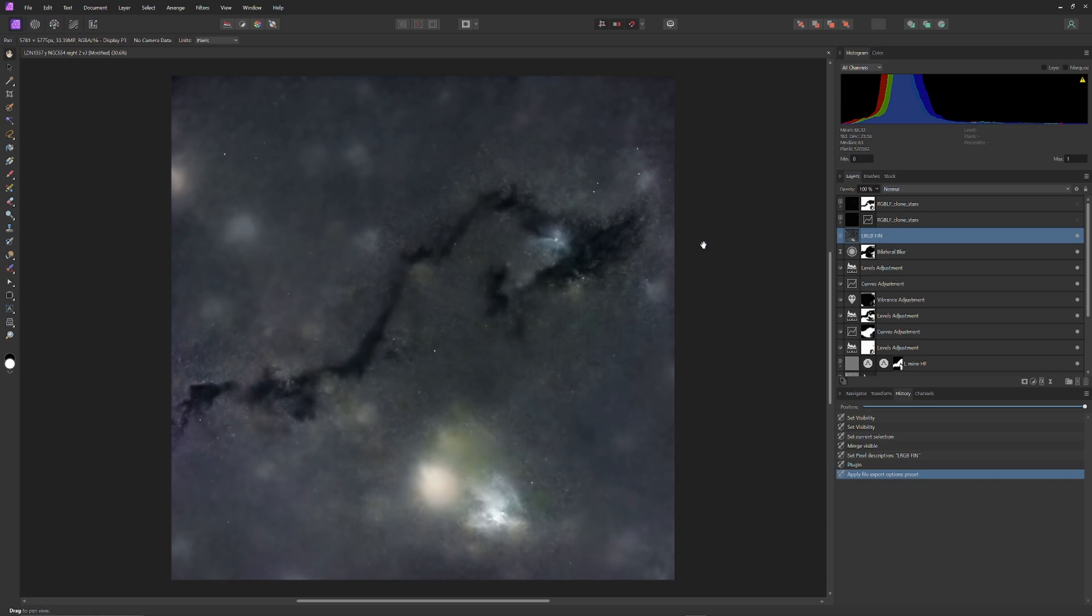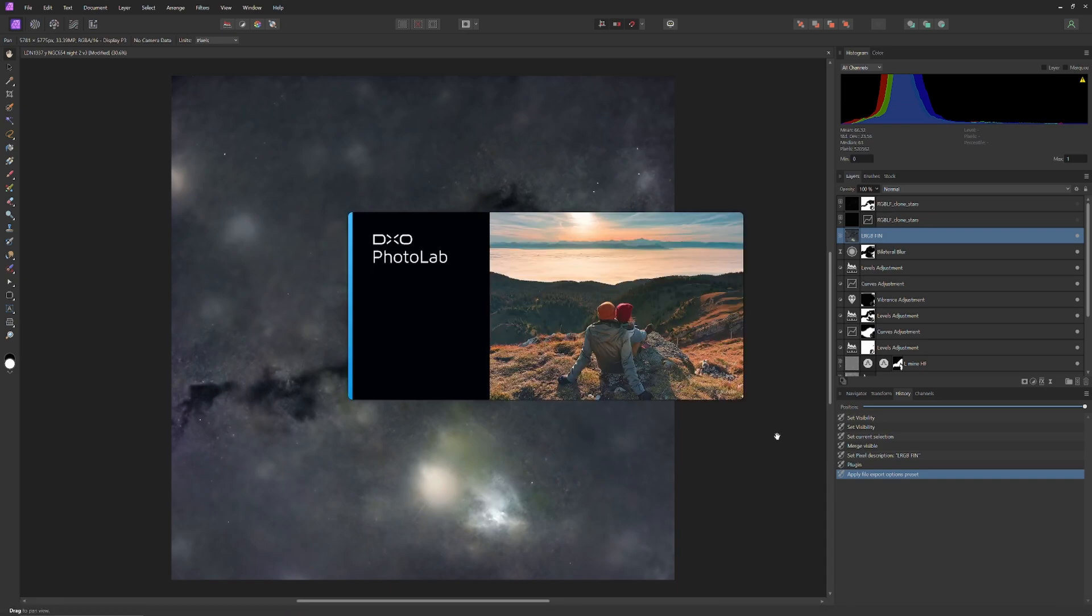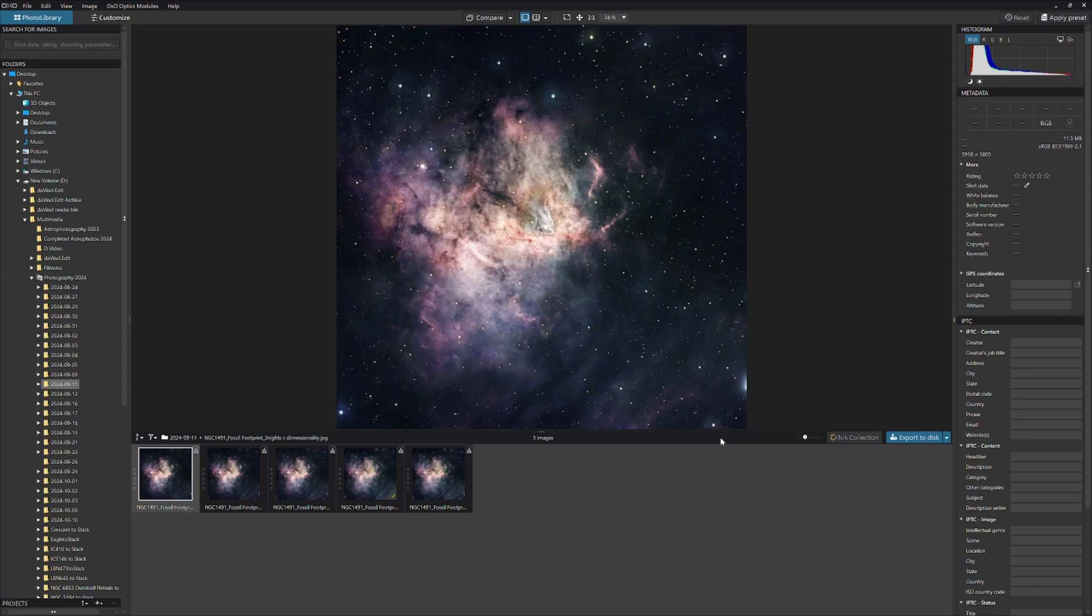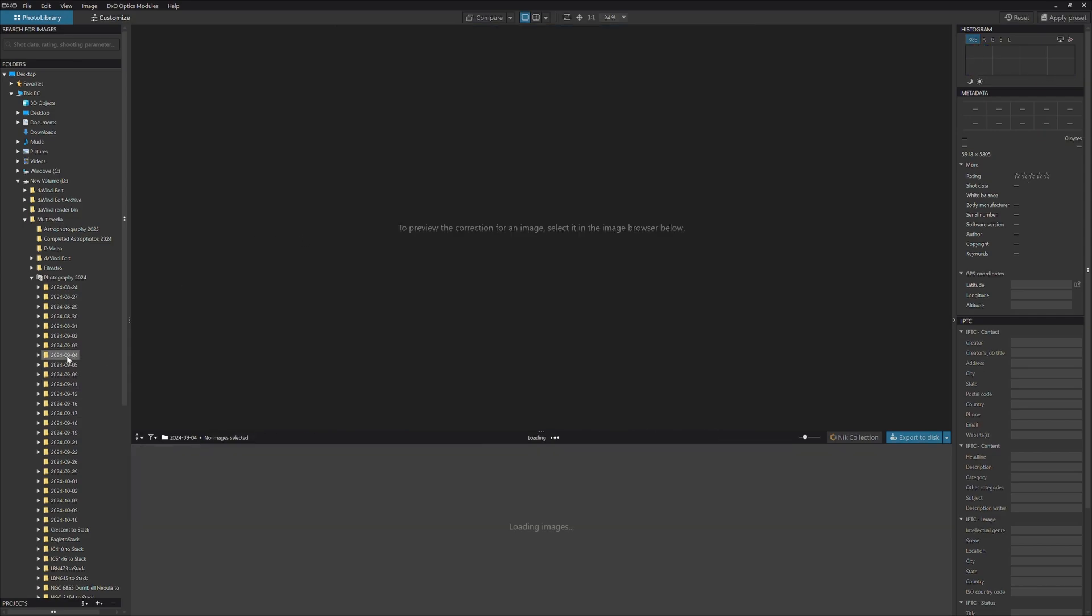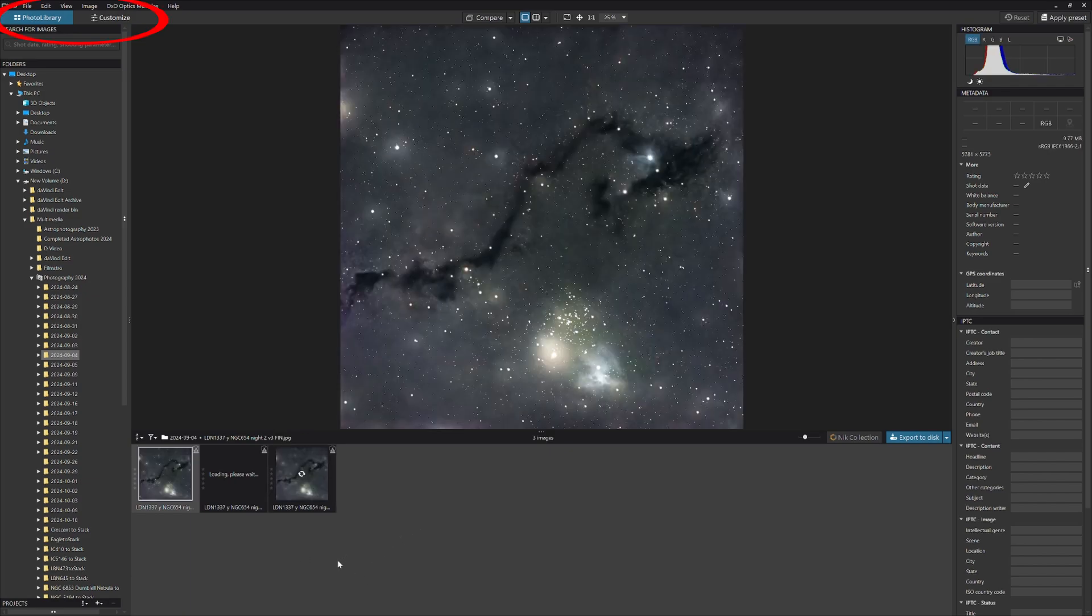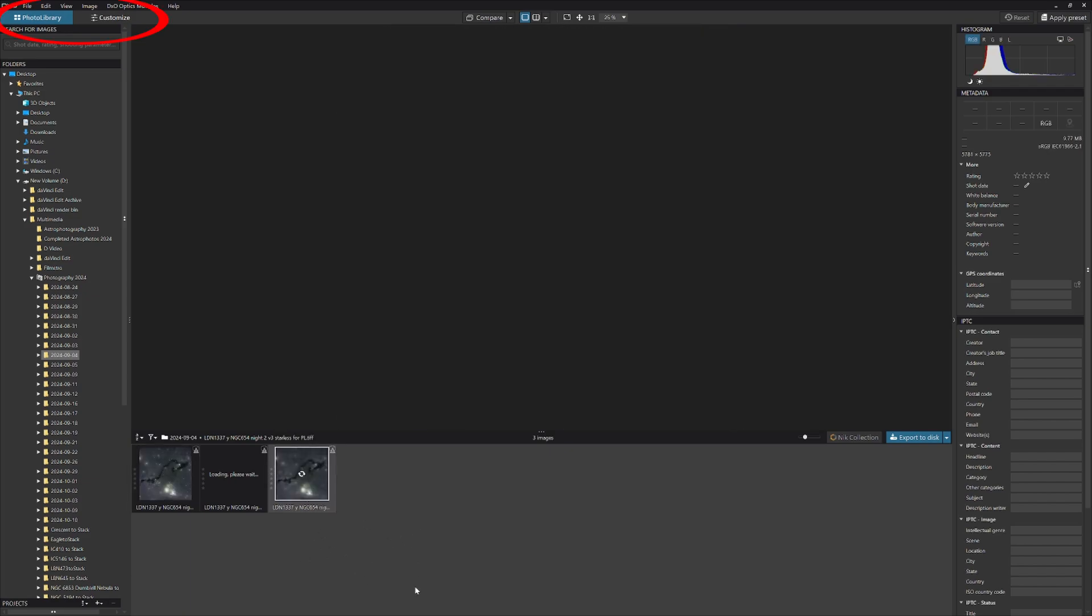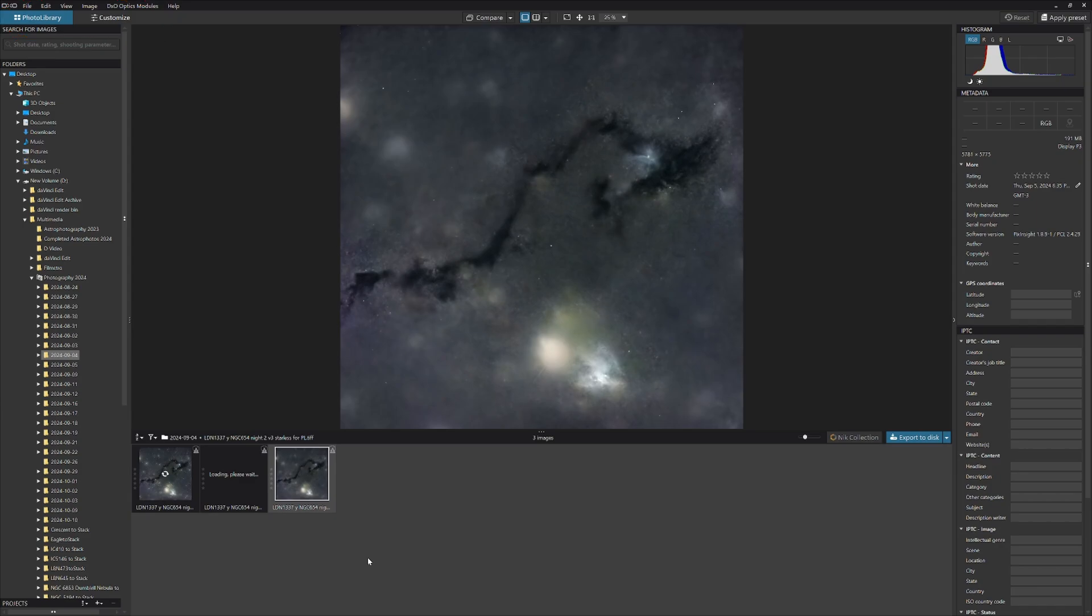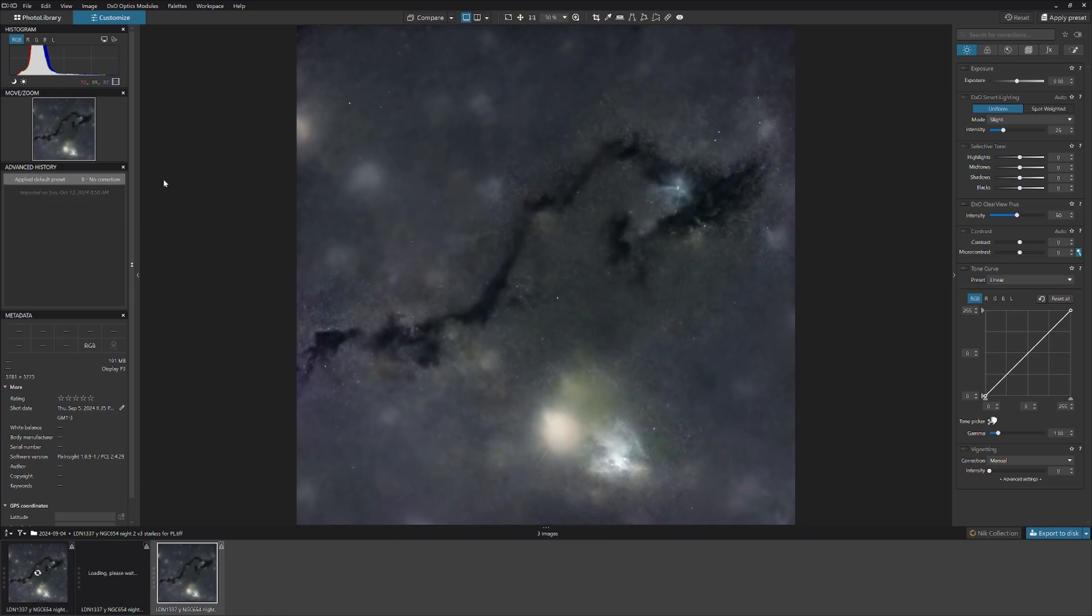Then go ahead and open Photolab 8 and bring in the image. Now you don't really import images into Photolab 8. It's set up so it can just look at your file folders where you keep your images. And when you see the image that you want, double click on it and it activates within the Photolab. Up on the top left, you'll see two icons, Photo Library and Customize. Photo Library is where you can view your images. When you find the image in your folder structure that you want to work on, just double click it. Photolab will then switch over to the Customize icon where you do all of your developing.